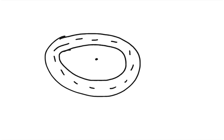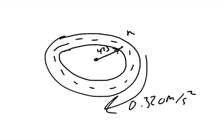So what we have here is this race track. The radius — imagine it's a perfect circle — the radius to the center of the track is 433 meters. And the car is accelerating at 0.320 meters per second squared. So it's constant acceleration.